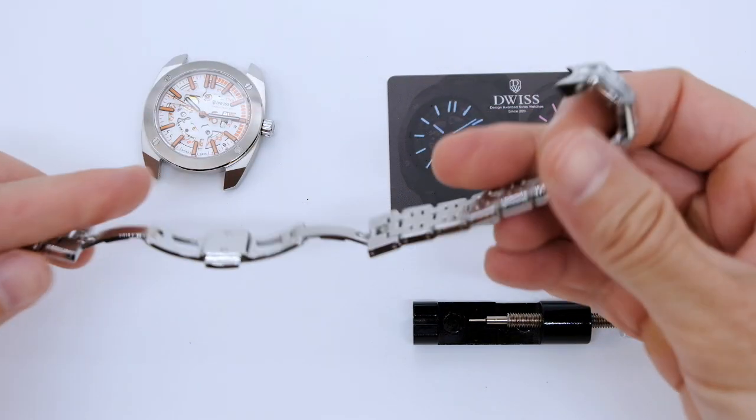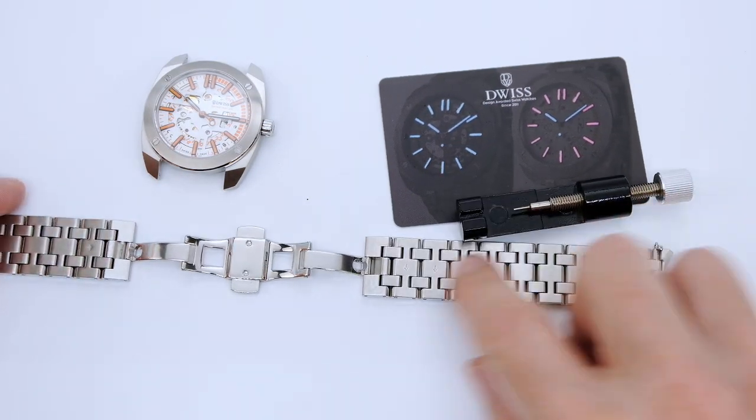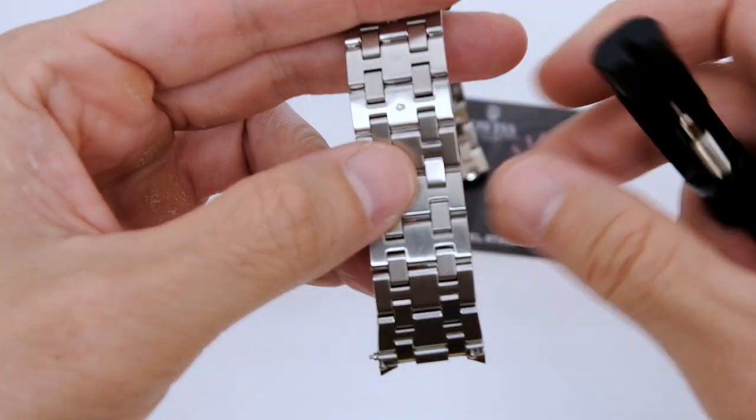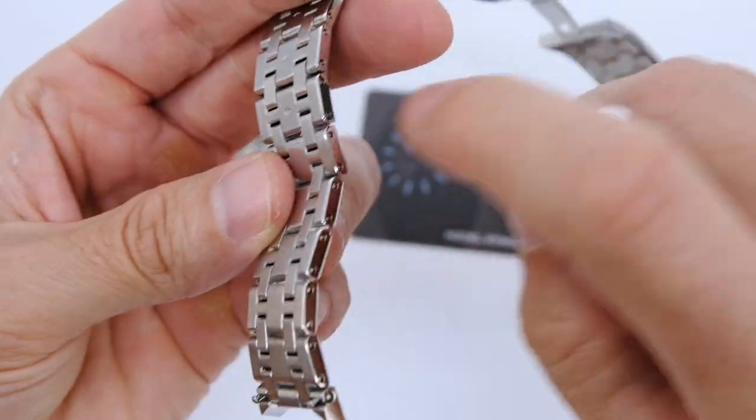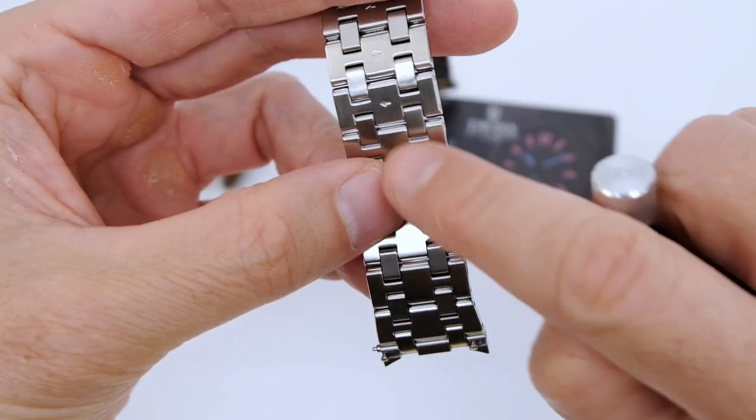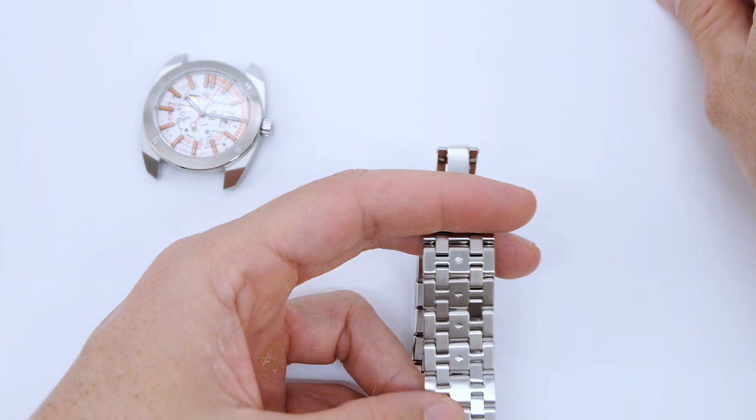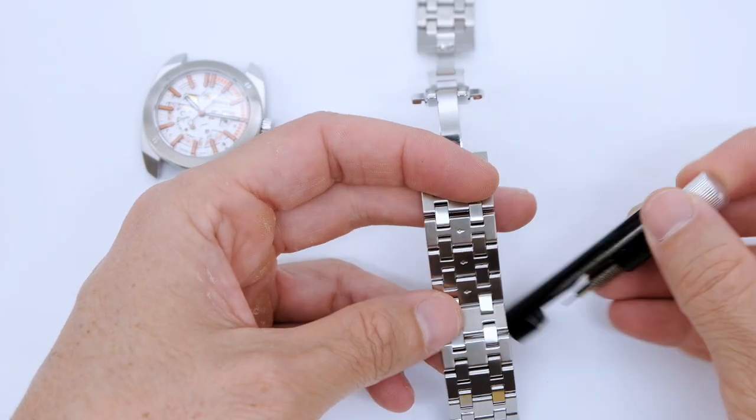And I want to remove three links from this side here, so I need to use a tool and press this pin here out in the arrow direction. So let's start doing this.